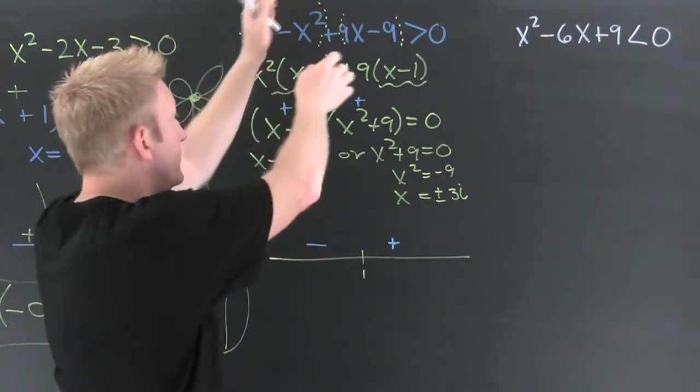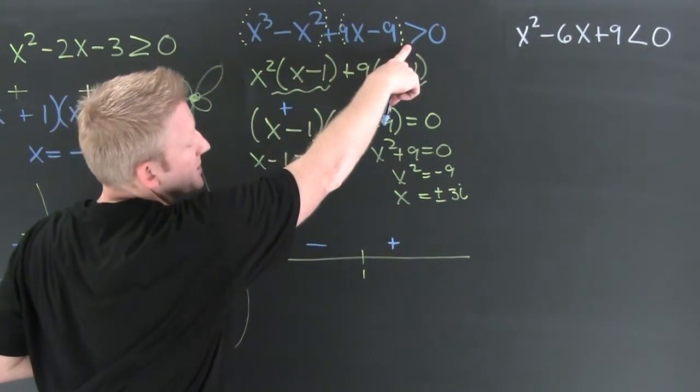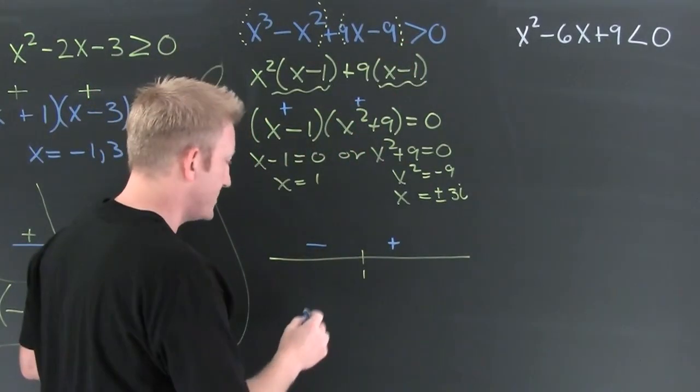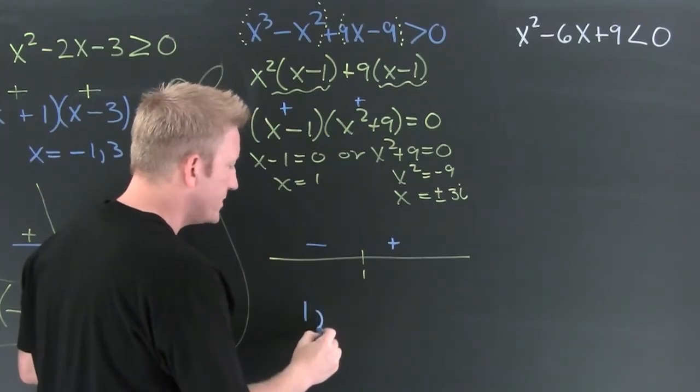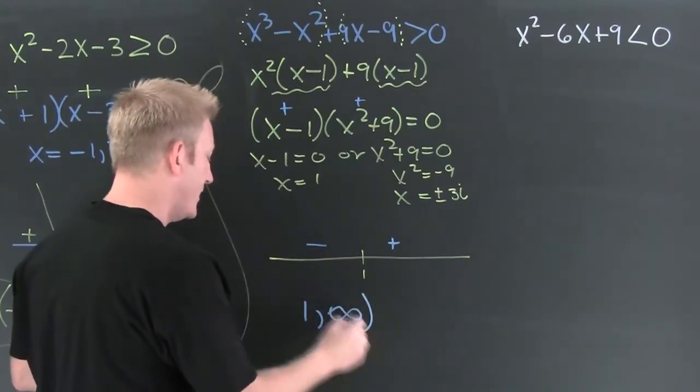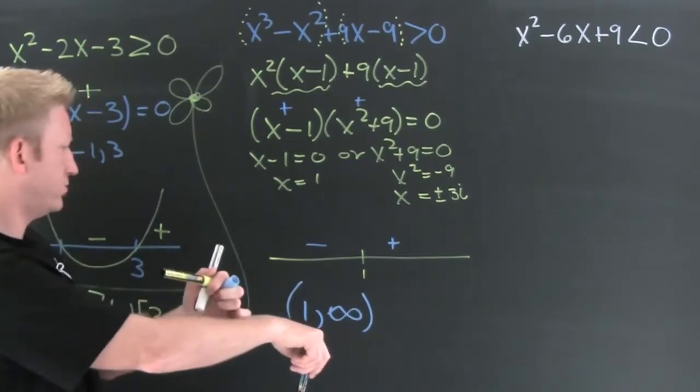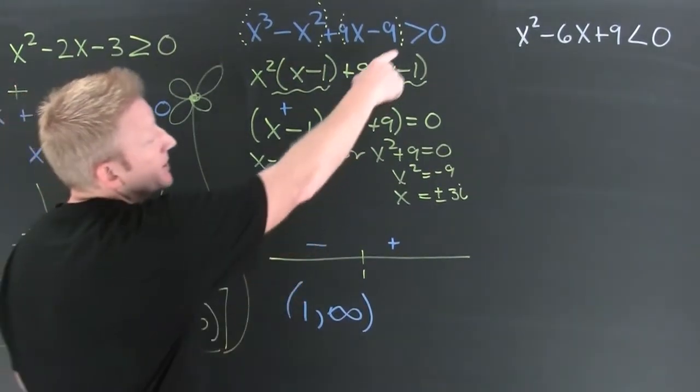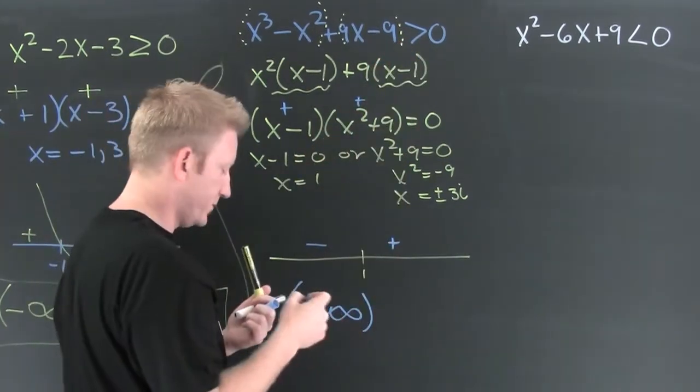Now we need to regress. We need to go back to the original. I'm looking for the ones that are bigger than zero. Are those the positive ones or those the negative ones? Them are the positive ones. So this is one to infinity and beyond. Once again, not including one because it's not or equals to.